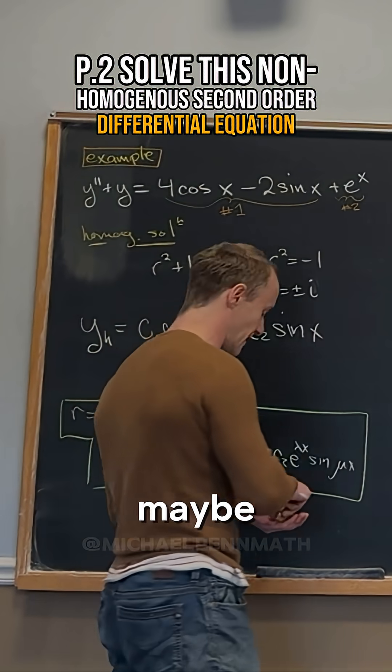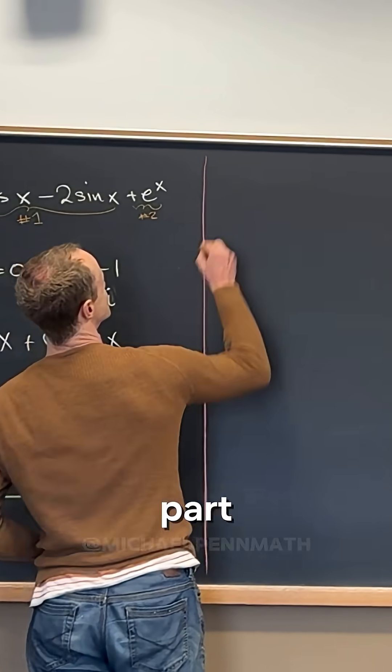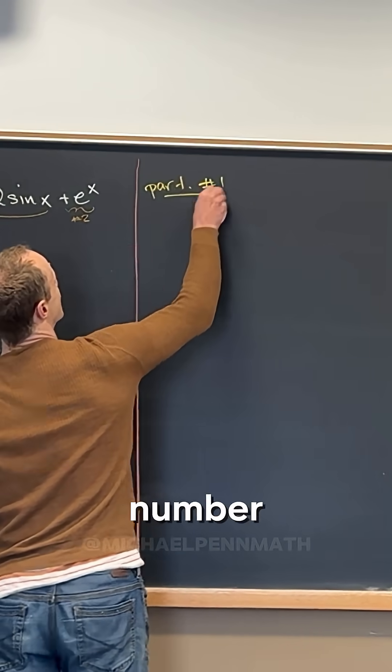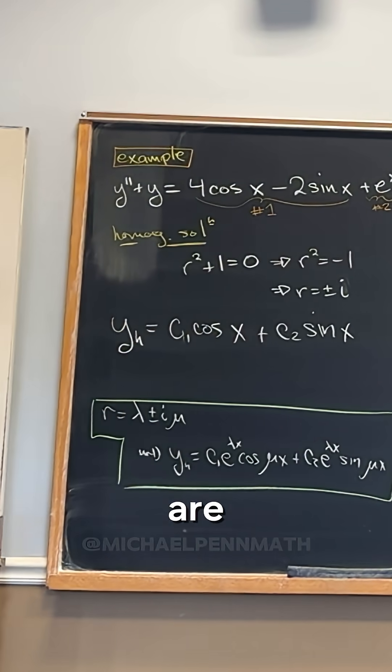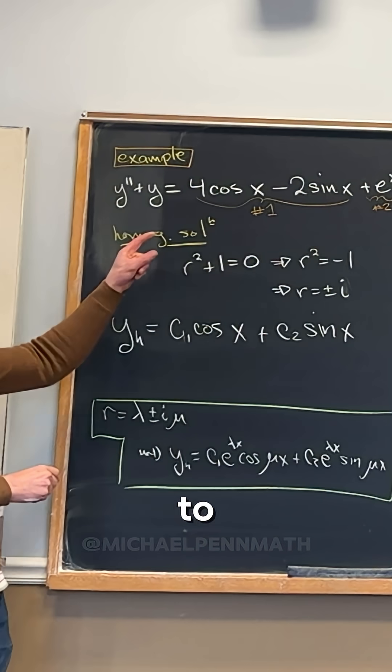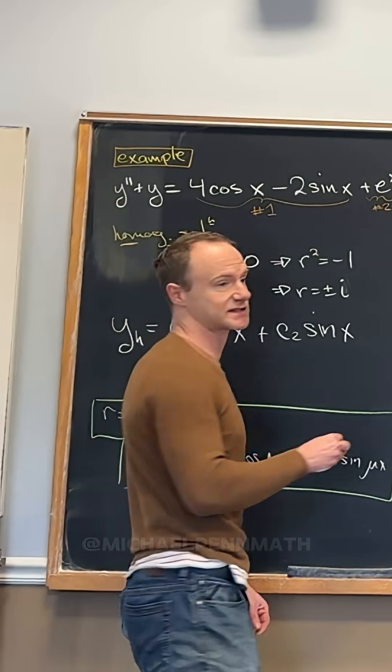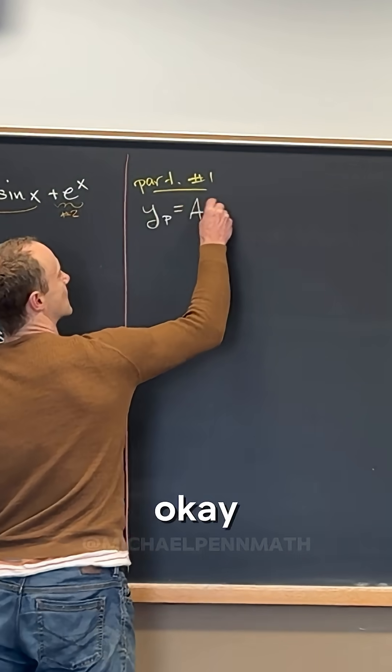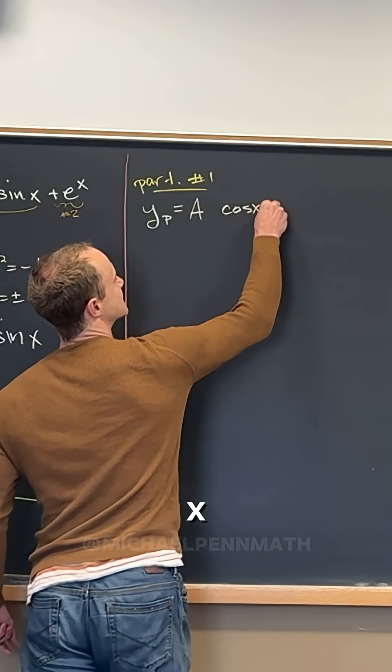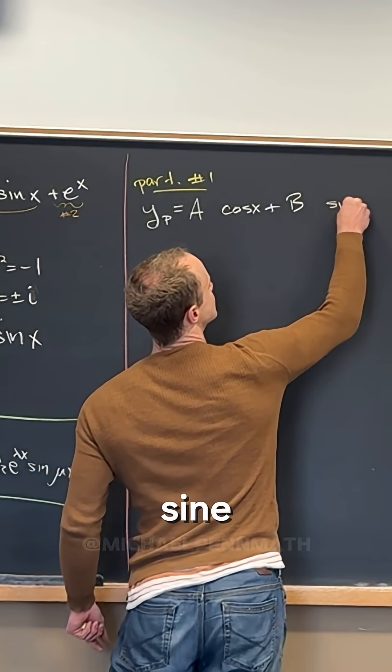Let's do the particular part one. If we are looking for the particular solution to this first bit, what's our guess of the particular solution? a cos x plus b sine x.